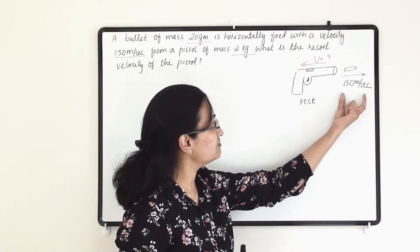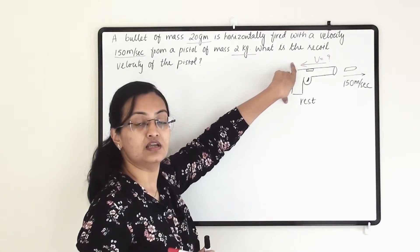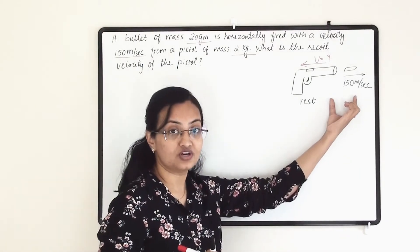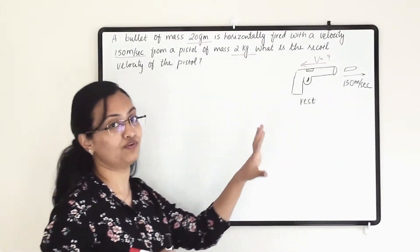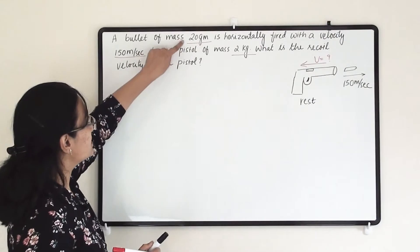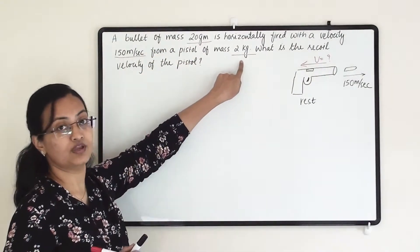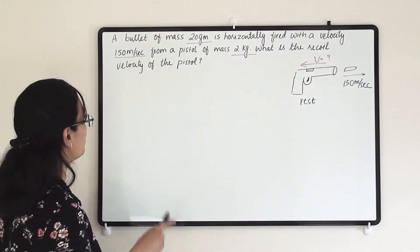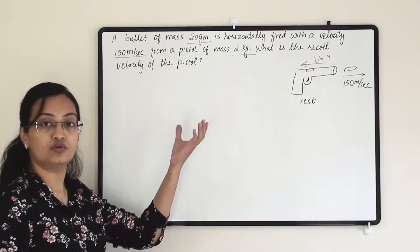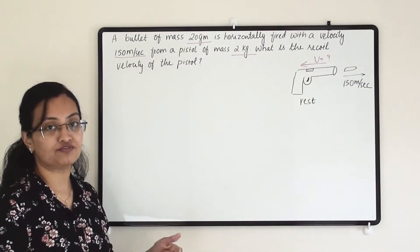Once the bullet fires, it will gain 150 m/s velocity. So we need to find what velocity the pistol will gain — with what velocity will the pistol come back because of this firing? We have the mass of both objects: bullet's mass is 20 gram and pistol's mass is 2 kg. We have to use the equation of conservation of momentum.